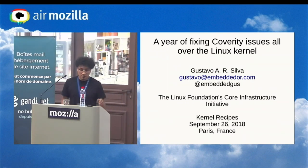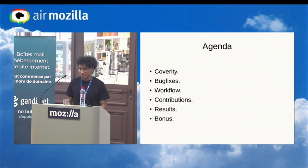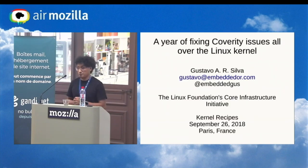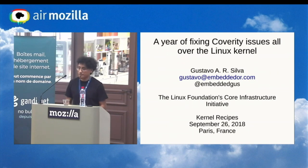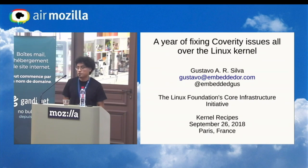I've been helping to remove VLAs from the code base, helping to prevent integer overflows during memory allocation, and working on adding the implicit fall-through option to the main Makefile. My work is supported by the Linux Foundation's Core Infrastructure Initiative.